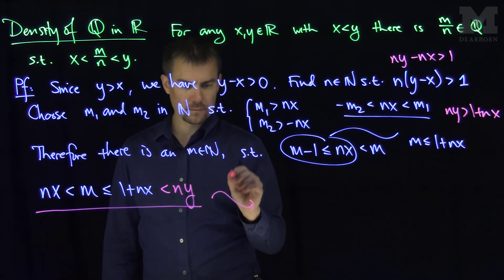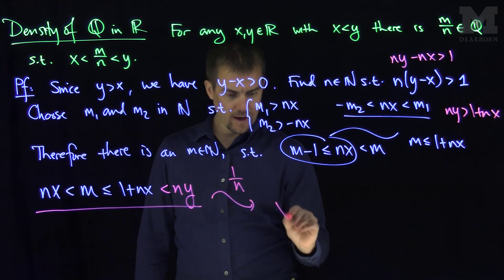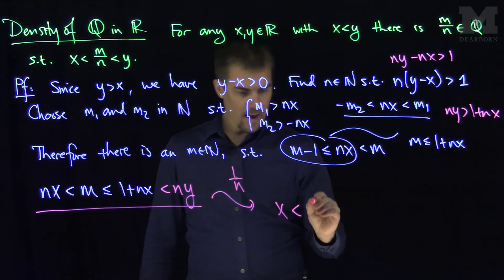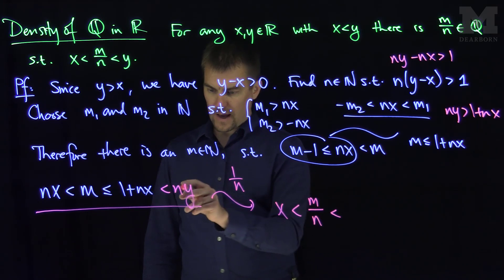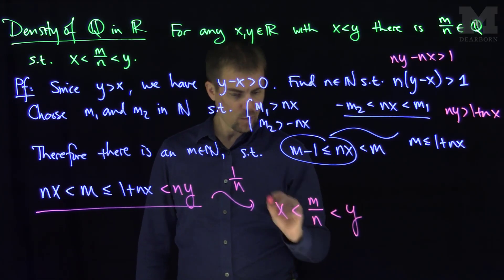If we divide by n, what we get is x is less than m over n, and that is less than y. So we have this relationship.